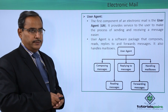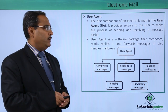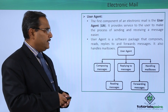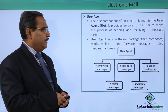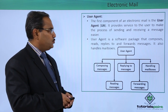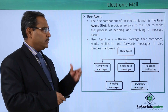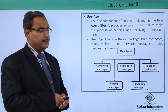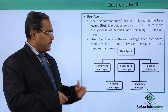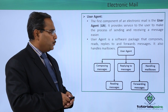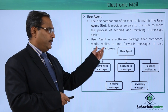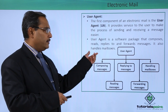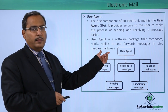The first component of an electronic mail is the user agent, in short called UA. It provides service to the user to make the process of sending and receiving a message easier. The user agent is a software package that composes, reads, replies to, and forwards messages. It also handles mailboxes.